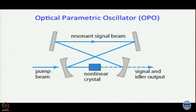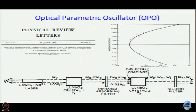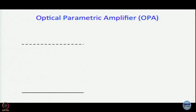The nonlinear crystal is placed inside a laser-like cavity so that the resonant signal beam makes several round trips and gets amplified. Signal and idler outputs typically travel in the same direction and can be separated using dichroic mirrors. The problem remains that intensity is very small, which leads us to the principle of optical parametric amplification.